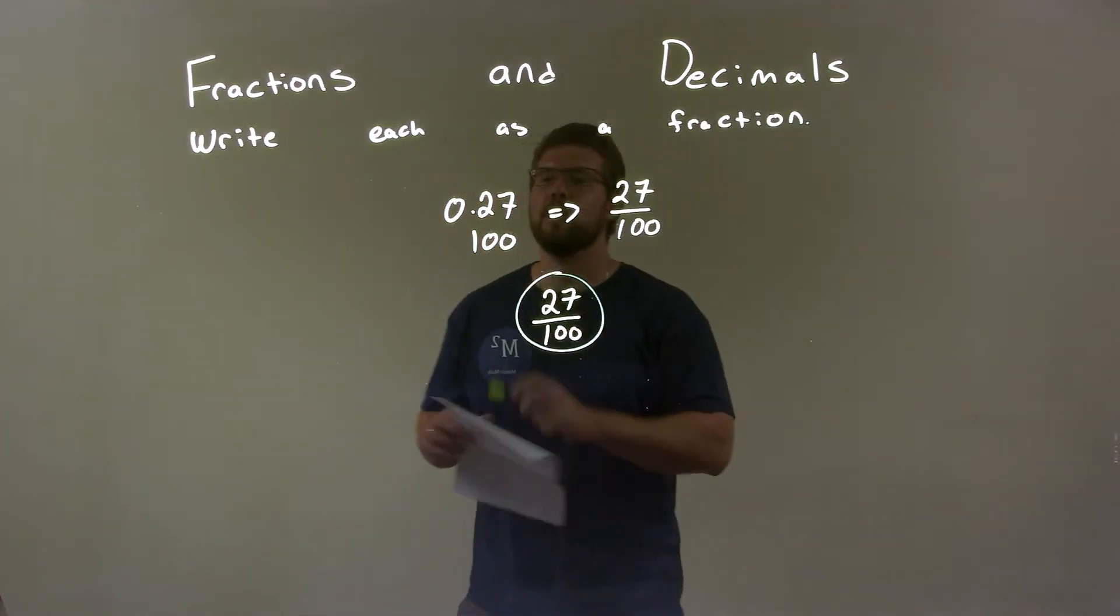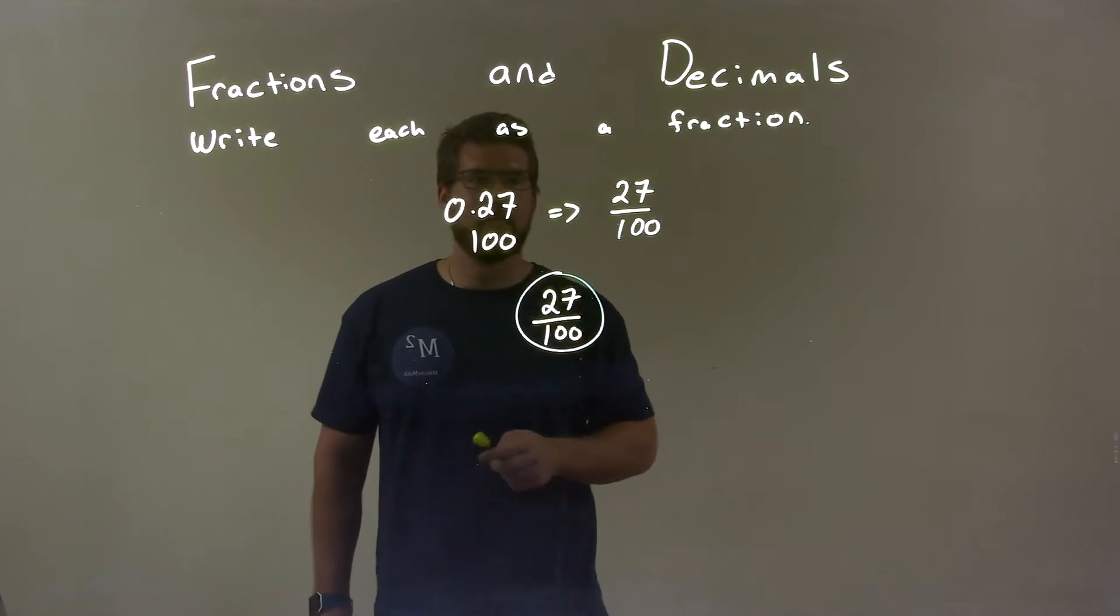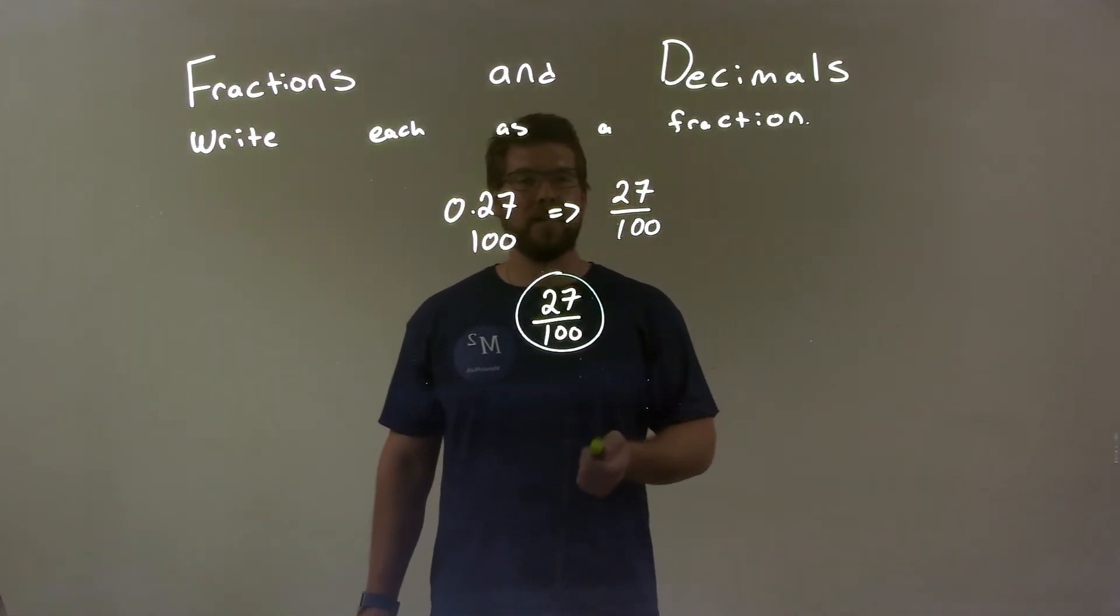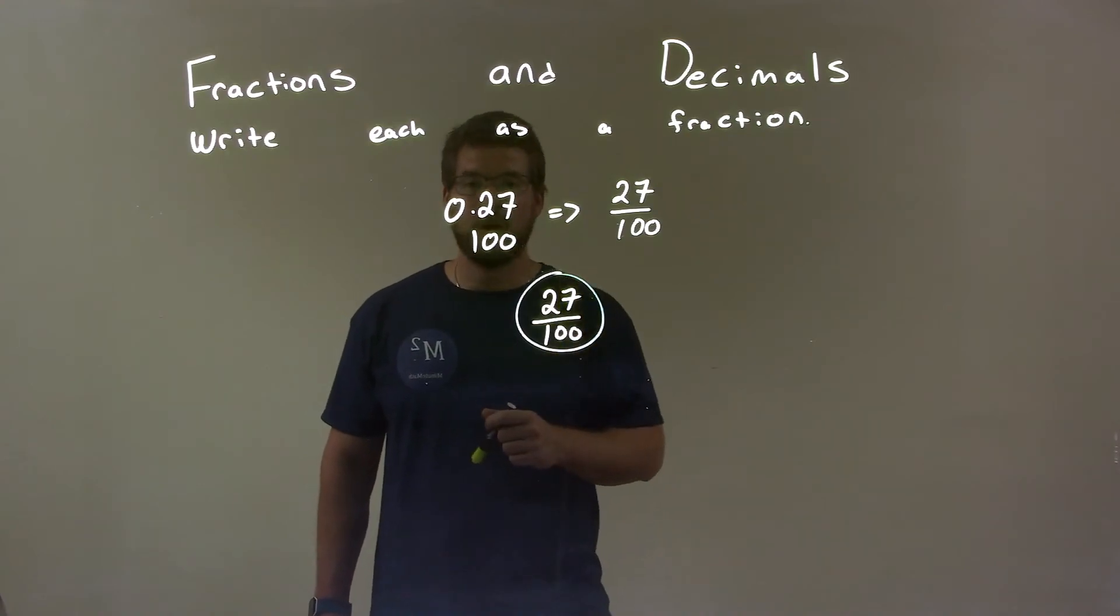So quick recap: we're given 0.27, and I have to write that as a fraction. Using my technique, I recognize that it's 27 over 100, and then it actually can't be simplified, so that was our final answer: the fraction 27 over 100.